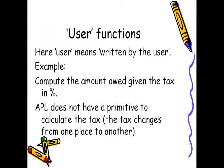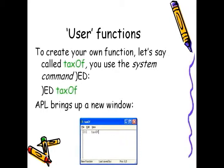In the term user function, the user here means written by the user. For example, when we want to compute the amount owed given the tax in percent, we need to supply two things: the amount and the tax in percent. APL does not have a primitive to calculate the tax, and the tax changes from one place to another. So we can create our own function.